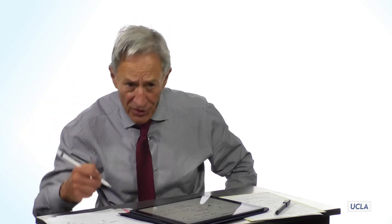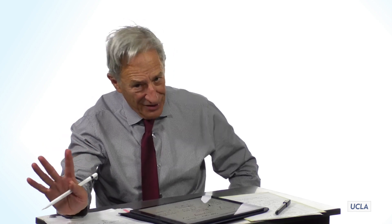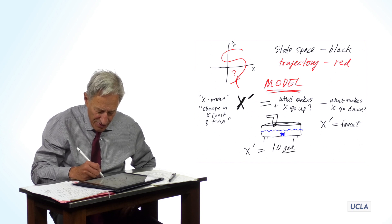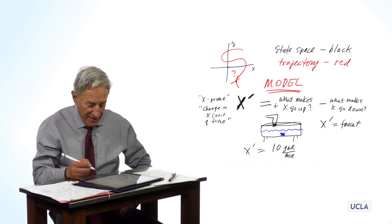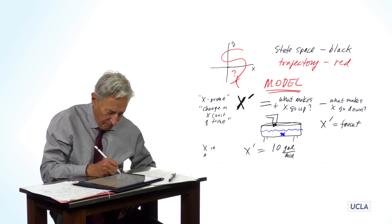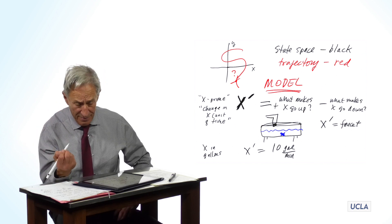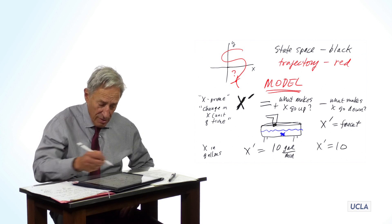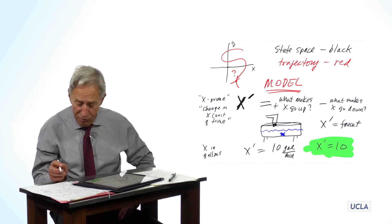And so what you ultimately need to do is you need to specify mathematically what is the faucet doing? Well, the faucet is adding water. And it's adding water. Let's just, again, assume for this first day of class model, let's assume that the faucet is flowing at a constant rate. Let's say it's 10 gallons per minute. So notice that the flow rate of the faucet, if x is in gallons, then x prime, or the flow rate, is in gallons per minute.